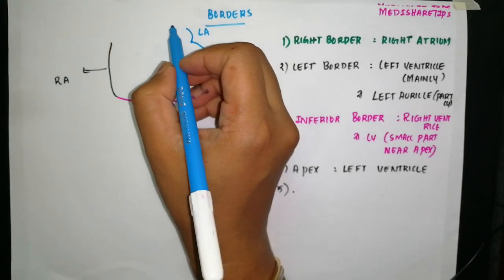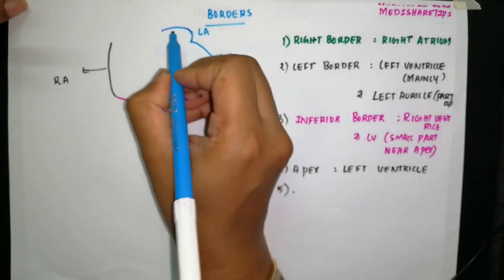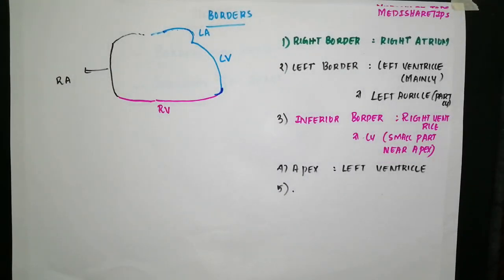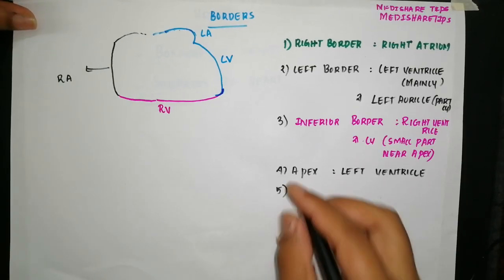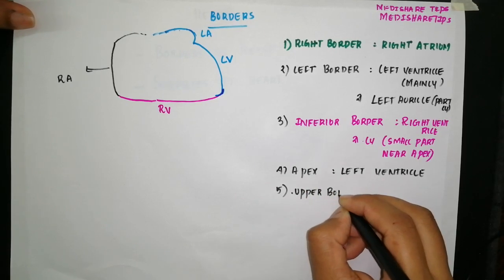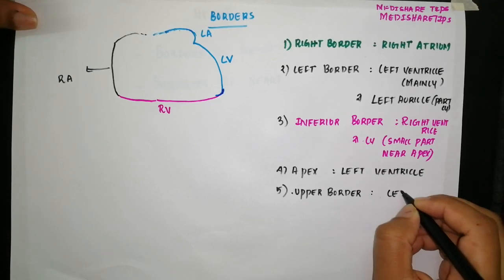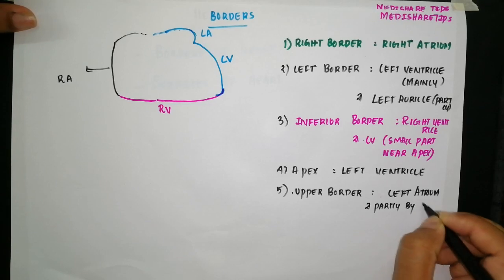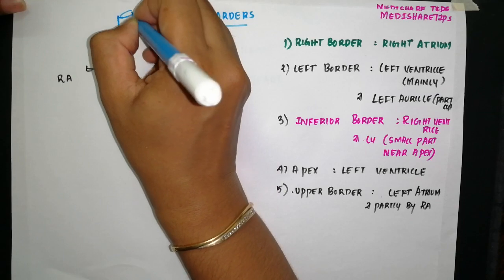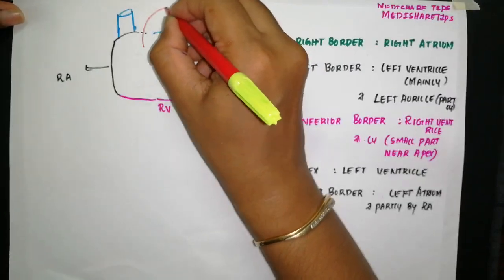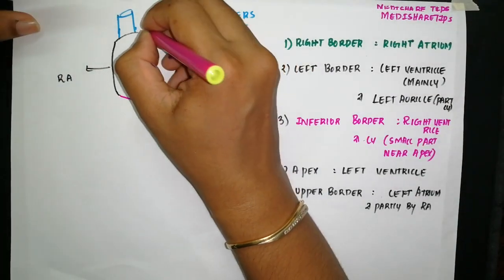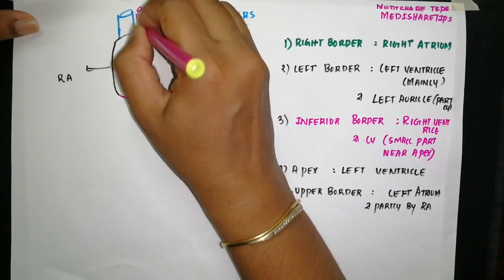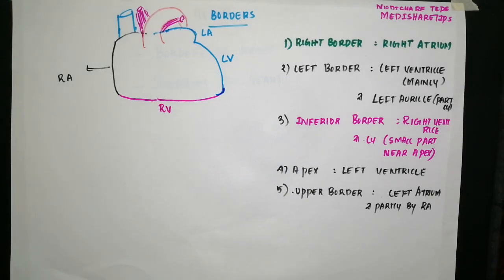The upper border is formed mainly by the left atrium and partly by the right atrium. Here we can also see the SVC opening, the arch of the aorta, and the pulmonary trunk. That's all about the borders of the heart.